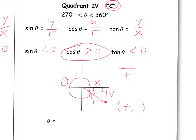What's the relationship between theta and theta_R in quadrant 4? Going all the way around is 360 degrees. We don't want to go all the way — only to our terminal arm. So we take 360 degrees minus theta_R. For example, if the reference angle is 30 degrees and we're in quadrant 4, theta would be 360 minus 30, which is 330 degrees.